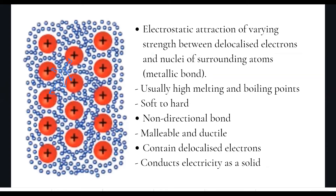So when we look at the arrows, we can see that they're not in any particular direction. This attraction is going this way, this one is going this way, this one is going this way, and so on. That electrostatic attraction — that metallic bond — is going in lots of different directions.